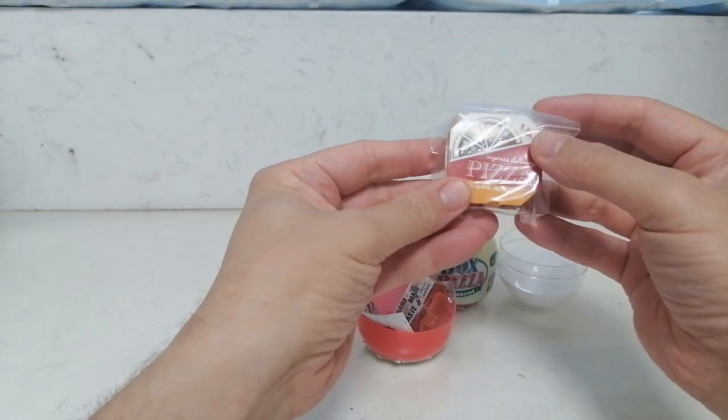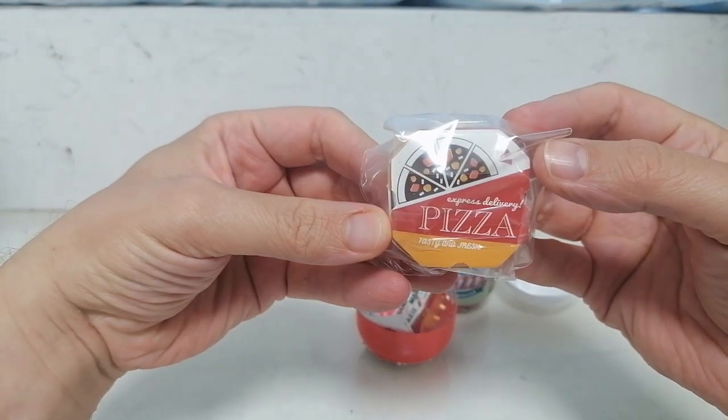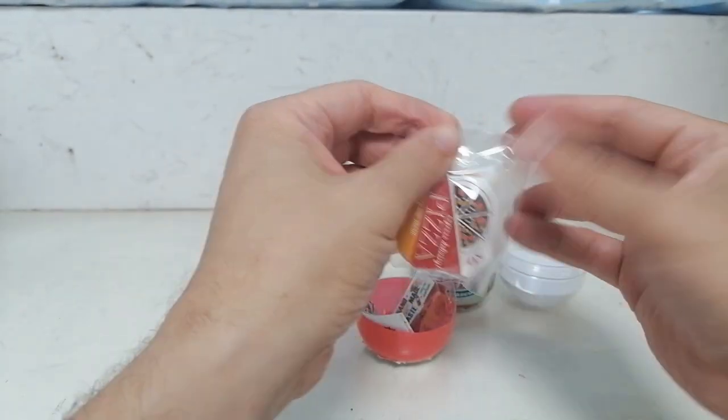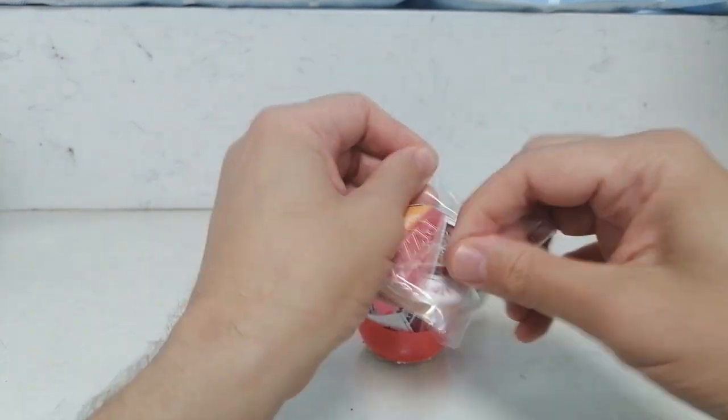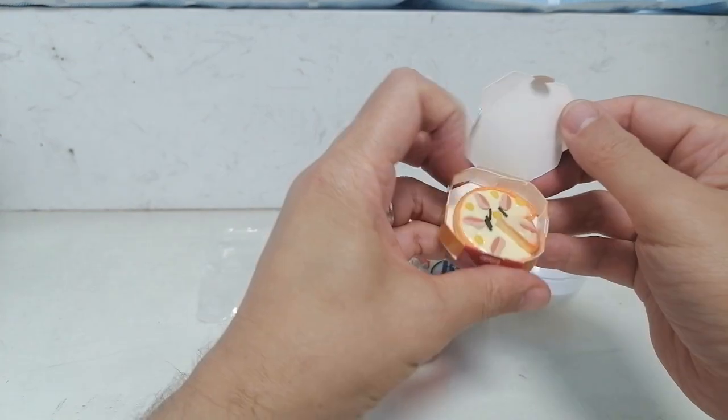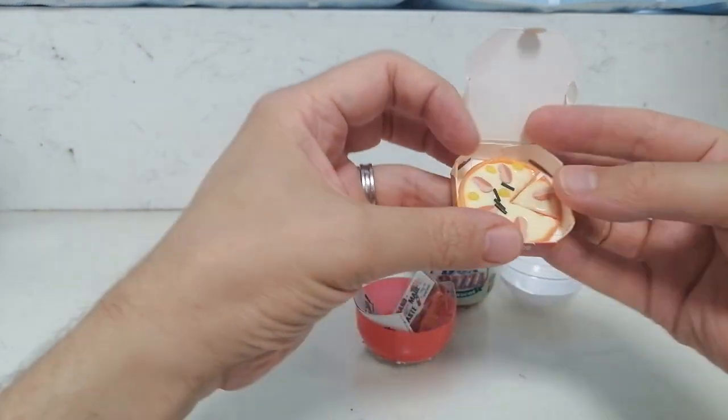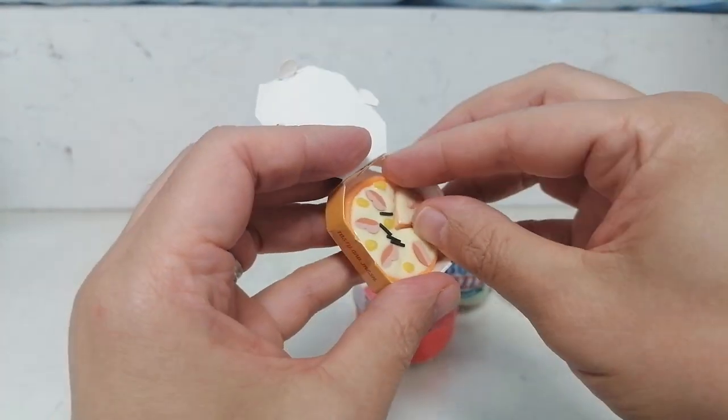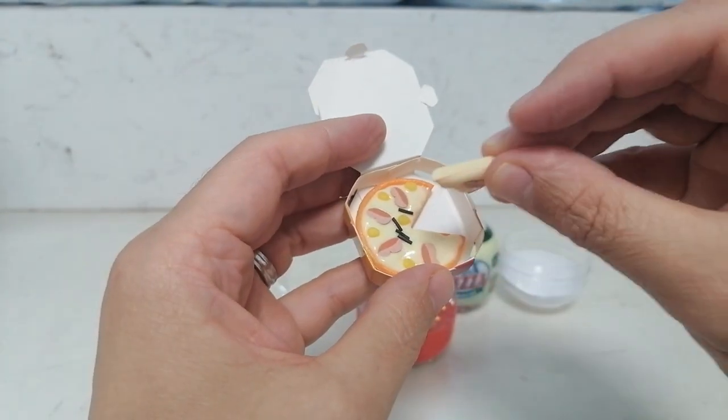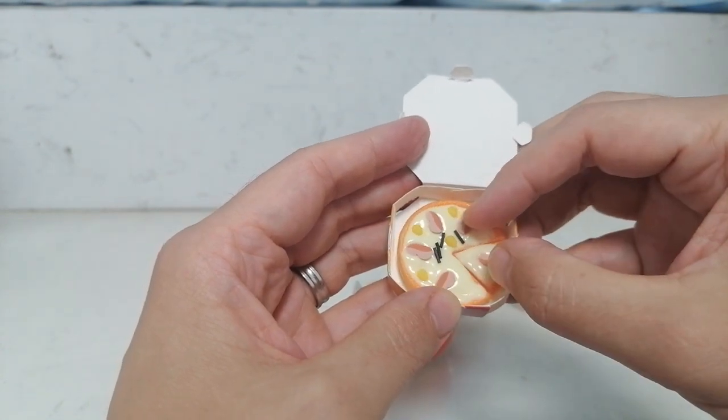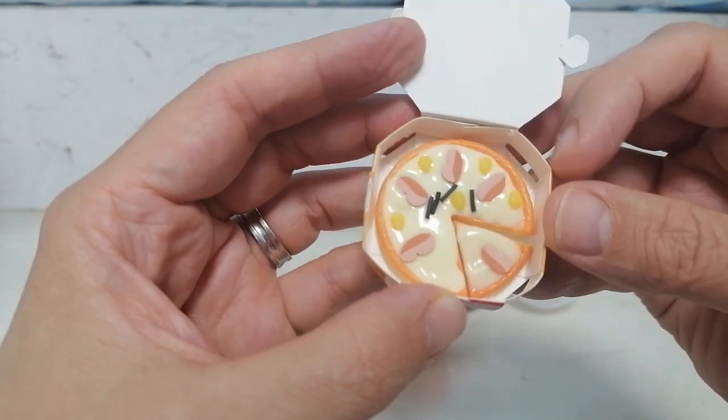All right, here is the pizza. Comes in a little box. Oh, there you go. And it's got one of the slices already cut out. That's pretty cool. Looks like there's corn and some kind of meat on there.